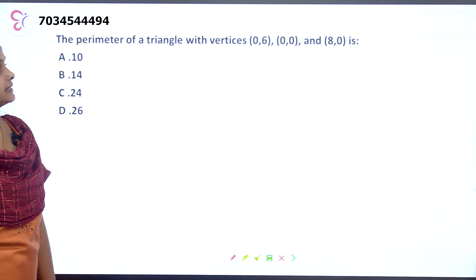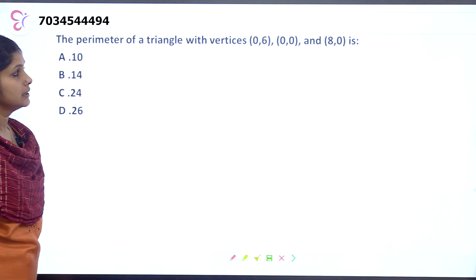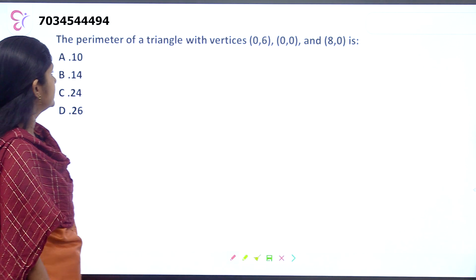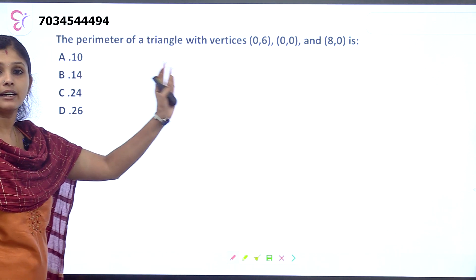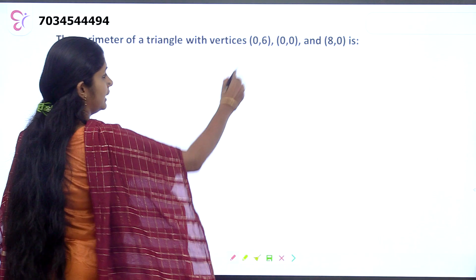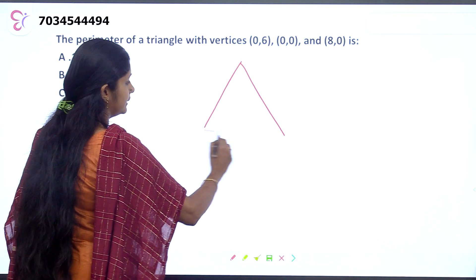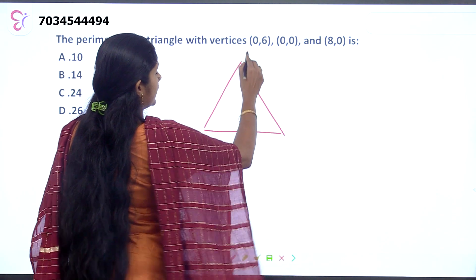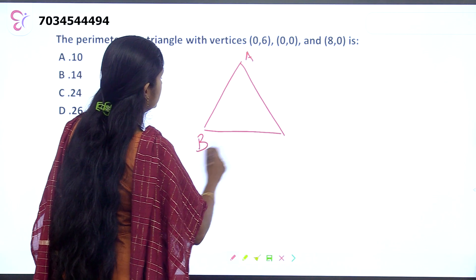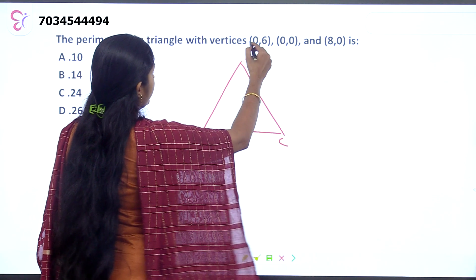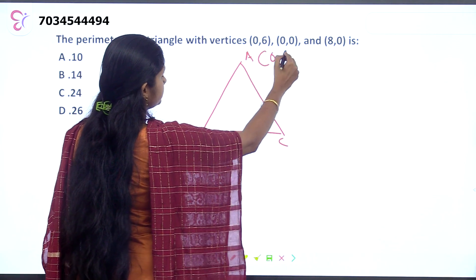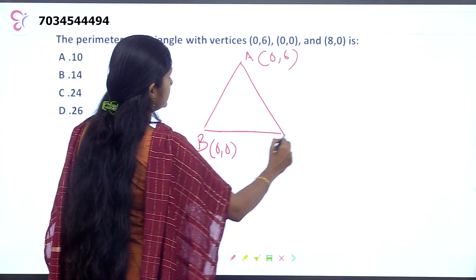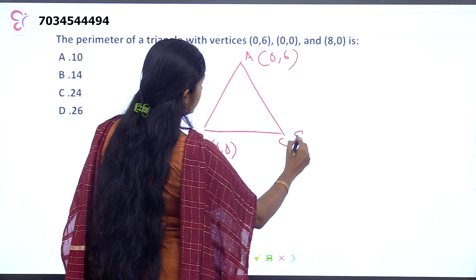The perimeter of a triangle with vertices (0,6), (0,0), and (8,0). Let the triangle be ABC, where A is (0,6), B is (0,0), and C is (8,0). We need to find the perimeter.